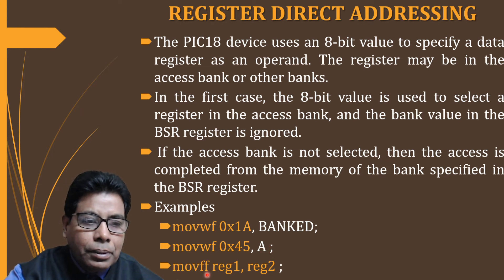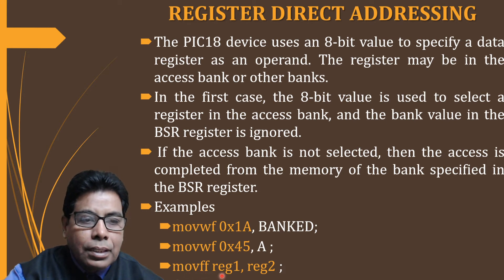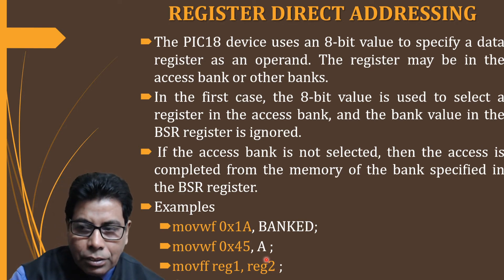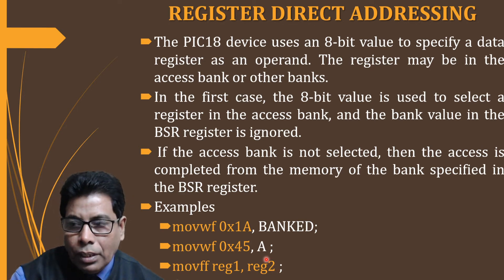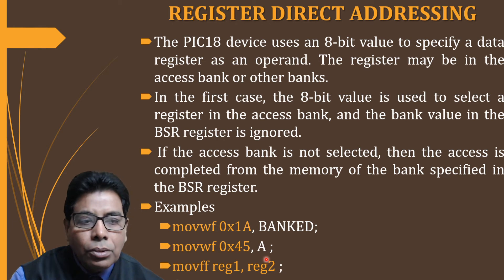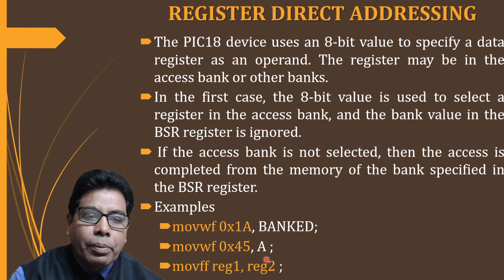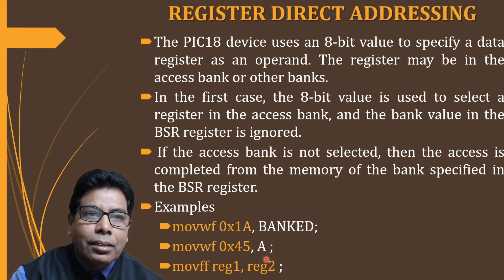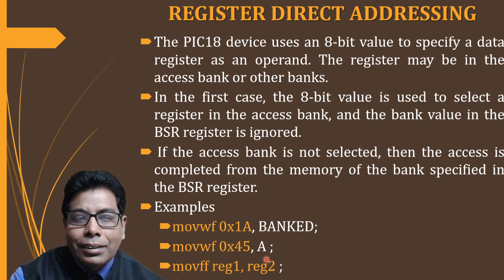In the third example, MOVFF register1, register2 — this copies the contents of register1 to register2. Both register1 and register2 use a 12-bit address. So this is register direct addressing: in the first case, the bank is specified by the BSR; in the second case, it is the access bank; and in the third case, a direct 12-bit address is used.